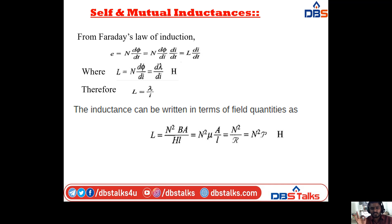Therefore L = δ/I. The inductance in terms of field quantities can be written as L = N² · BA / HL = N² · μ · A/l = N²/R Henrys, or equivalently L = N² · P Henrys, where R is reluctance and P is permeance. This gives the inductance in terms of field quantities.